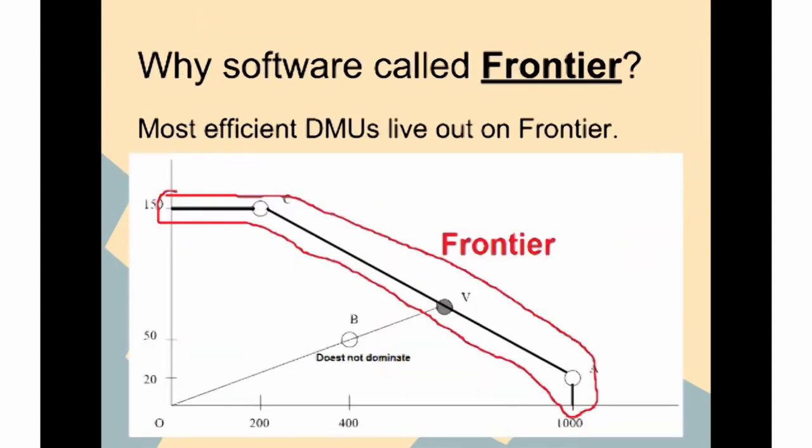This outlined red line here is called the frontier. It shows what the most efficient DMUs are in your equations.